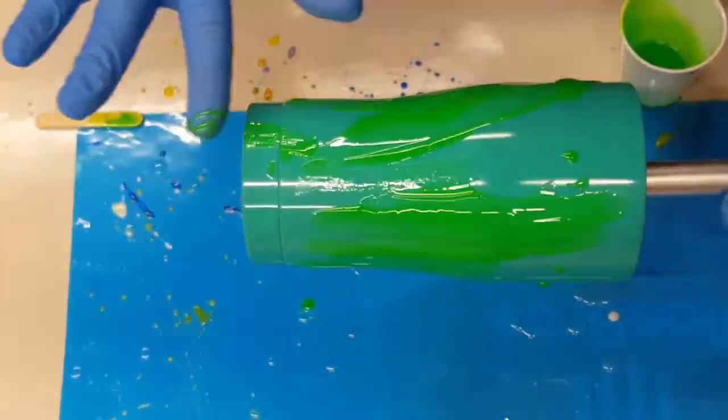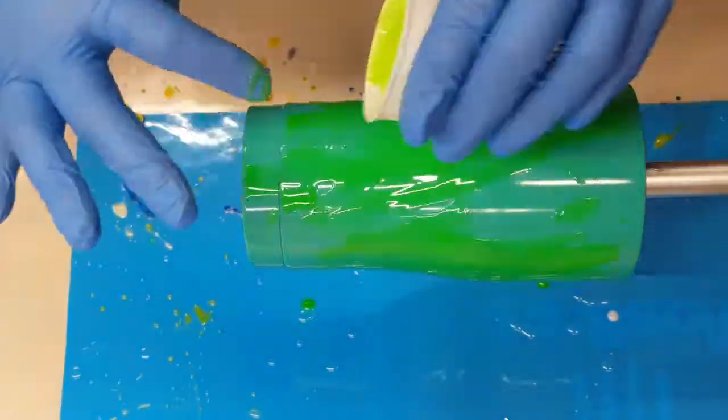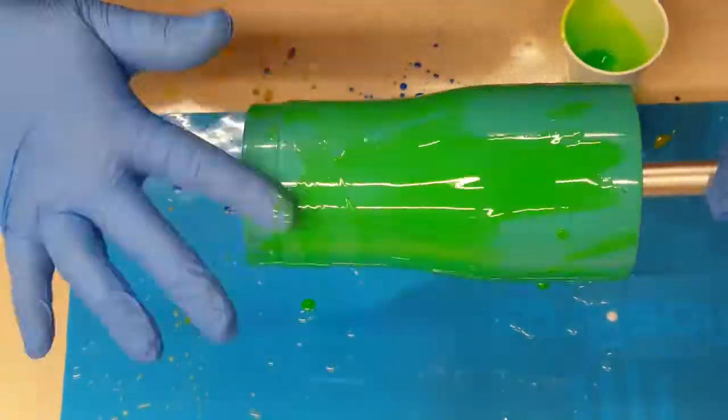So this is a 20 ounce modern curve tumbler that I have prepped and given a base coat of a mint green.